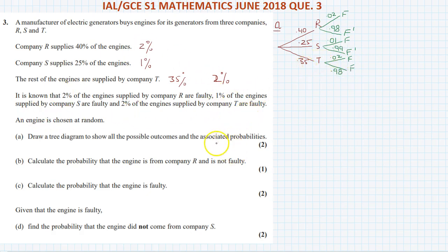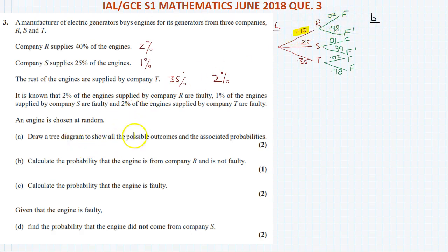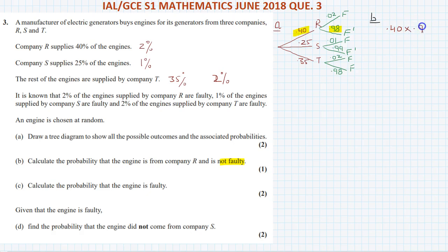Part B: calculate the probability that the engine is from company R and is not faulty. We are buying 40% from company R, so the probability is 0.4, and the engine is not faulty with probability 0.98. So the probability for part B is 0.40 multiplied by 0.98, which equals 0.392.